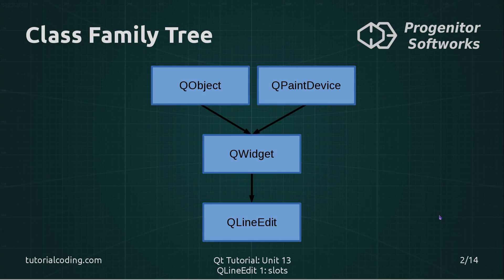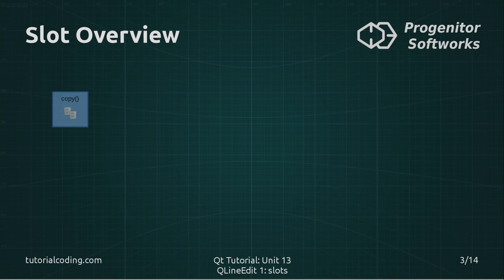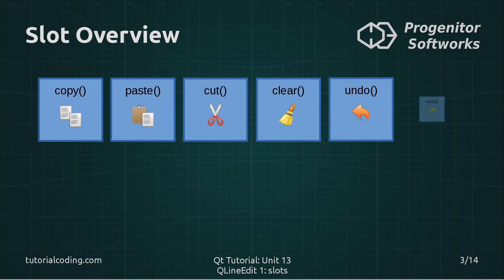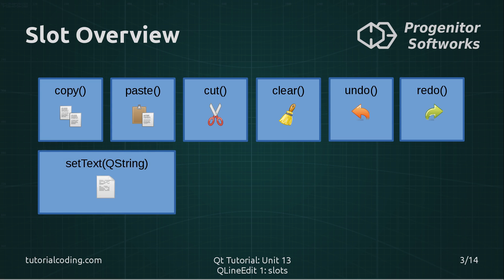Here's a brief overview of the QLineEdit's family tree — it's a widget. The first three slots I introduce will interact with the system clipboard. The clear slot clears any text on the line edit. Undo and redo undo and redo any text edits that have been done to the line edit. And set text with a key string sets the text that is passed to it.